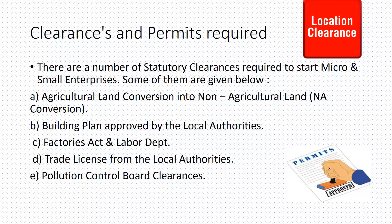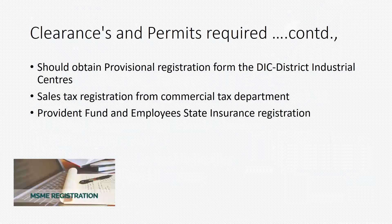Further statutory clearances required include: for agricultural land conversion into non-agricultural land, an NOC has to be obtained. Building plans should be approved by local authorities. The Factories Act and Labor Department should give approval of the proposed project. A trade license should be obtained from local authorities, and clearances from the Pollution Control Board. Additionally, a provisional registration certificate from the district industrial center, sales tax registration from the Commercial Tax Department, and Provident Fund and Employee State Insurance registration should also be completed.